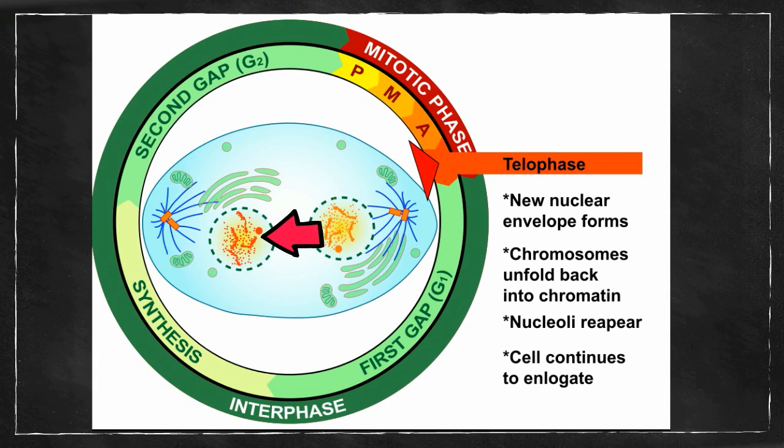Secondly, the nuclear membrane that was dissolving during prophase now begins to reform, except this time you have two nuclear membranes on each pole of the cell.